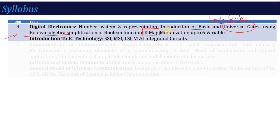In your syllabus, K-map minimization is up to 6 variables — you will see 2, 3, 4, 5, and up to 6 variables. Then a short topic is also there — introduction to IC technology, Integrated Circuit Technology. We will talk about small scale integration, medium scale, large scale, and very large scale — that is the evolution of your integrated circuit.